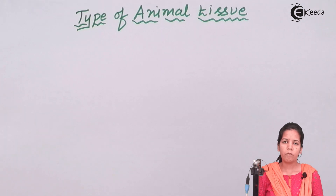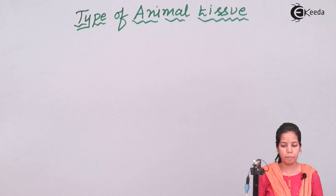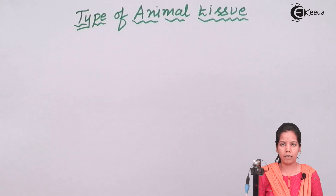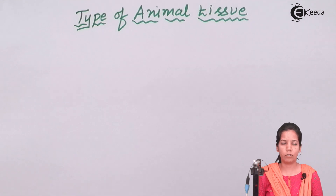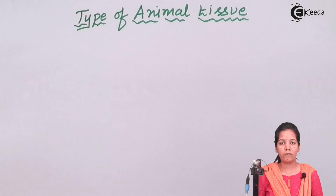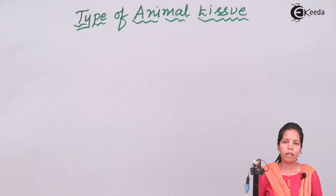In animals there are four different kinds of tissues available: the first one is epithelial tissue, next is muscular tissue, connective tissue, and nervous tissue.